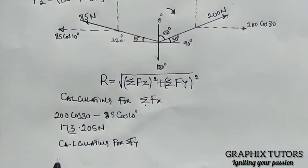we will focus on the vertical one. So we will have 200 sine 30 plus 85 sine 10 degree.